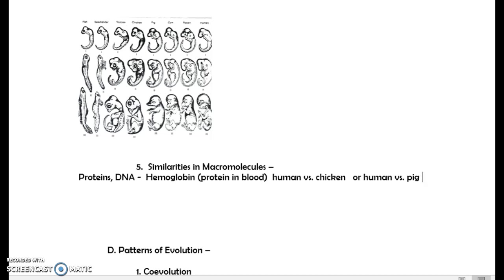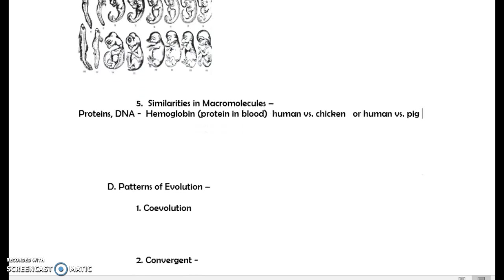So those are four, five pieces of things that they somewhat group together to say, this is evidence that evolution has happened. The next piece are patterns of evolution.